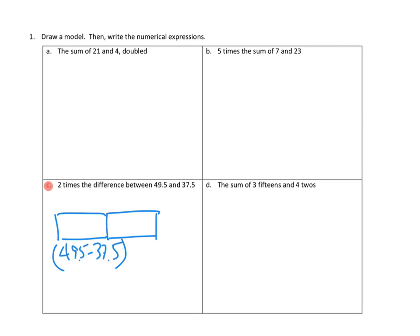So then we want to look at the numerical expression. Okay, so two times the difference of 49.5 minus 37.5. Two times the difference, right? We figure out the difference, and we take two times that. So there we go. There's the difference here in parentheses. Here's the difference here in a visual model.